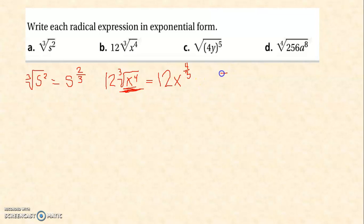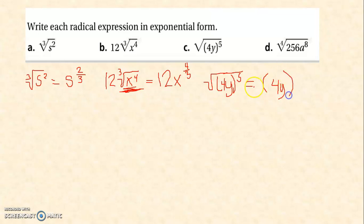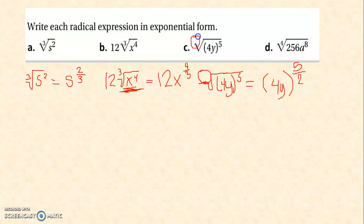Letter C: the square root of (4y) raised to 5. Here, 4y is enclosed by open and closed parentheses. So we write (4y) raised to 5 over 2 in exponential form. Can you see any index number? No — always remember: if you cannot see any number as the index, it is understood that the index is 2, because that represents the square root. Therefore, the index is 2, giving us (4y) raised to 5 over 2.